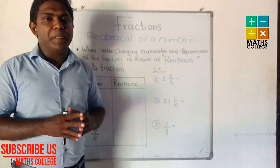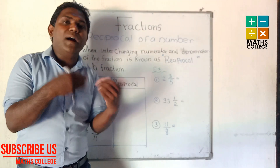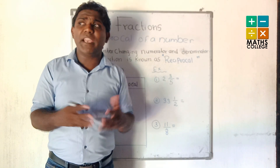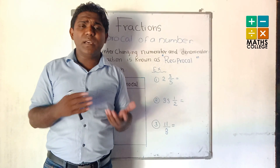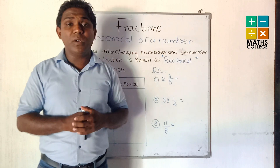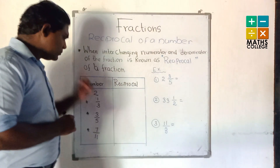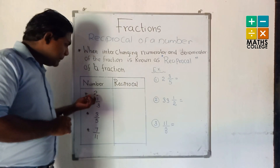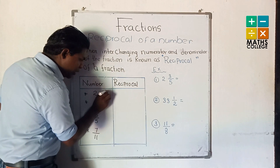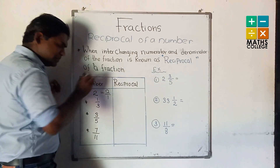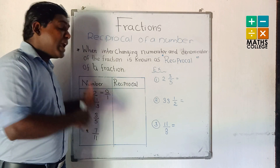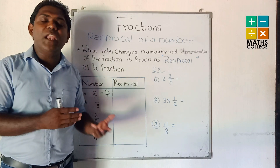Numerator and denominator. Now I think you are thinking about numerator and denominator. When I say numerator and denominator, a whole number also has a numerator and denominator. The whole number also has a denominator. When any number is divided by 1, it does not change the value of that number.